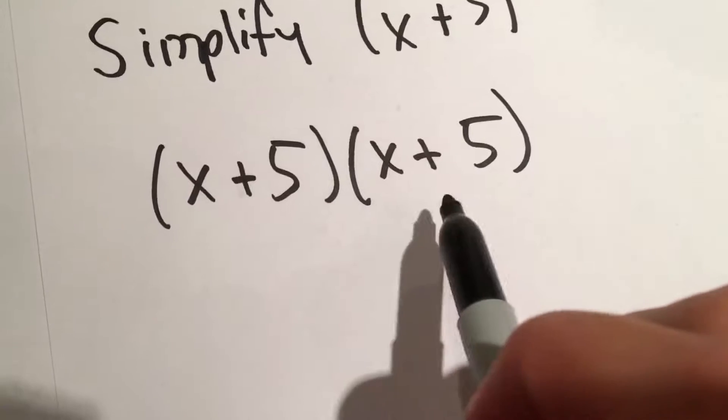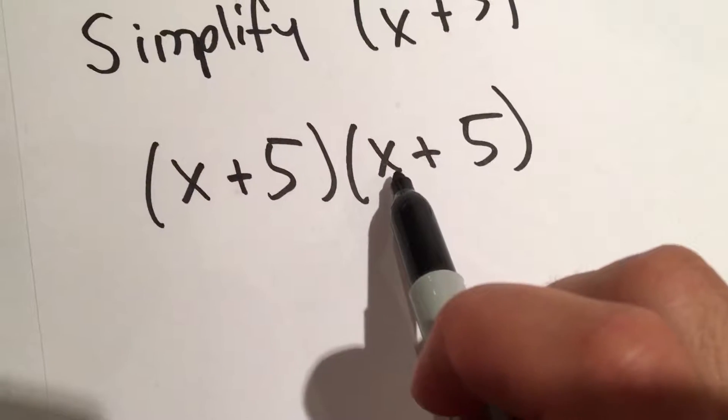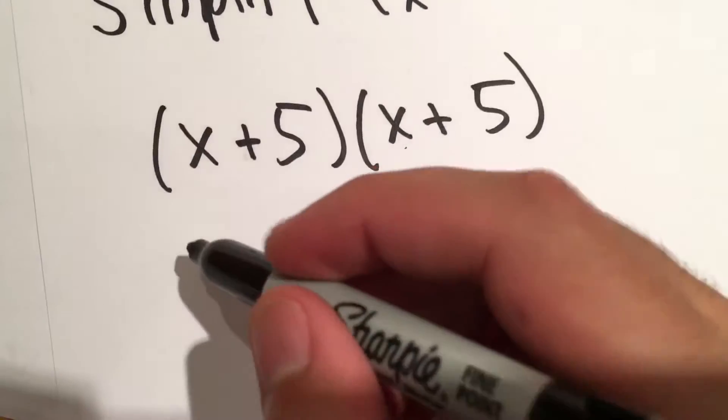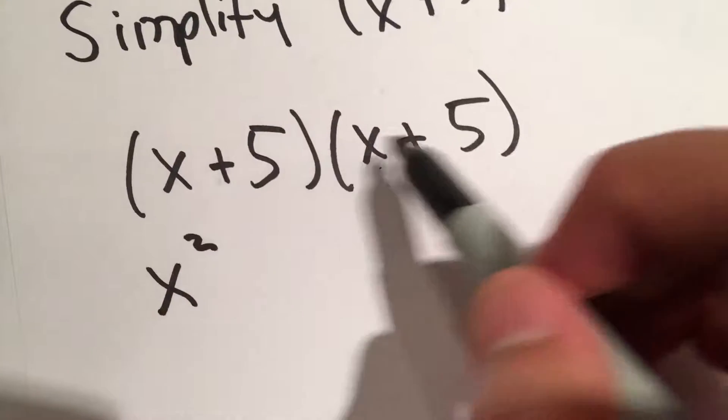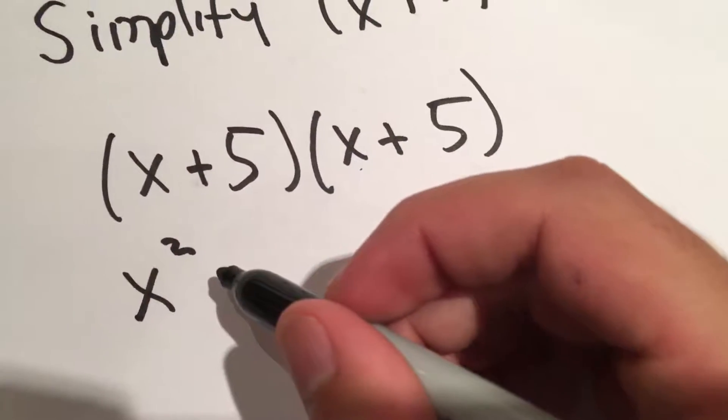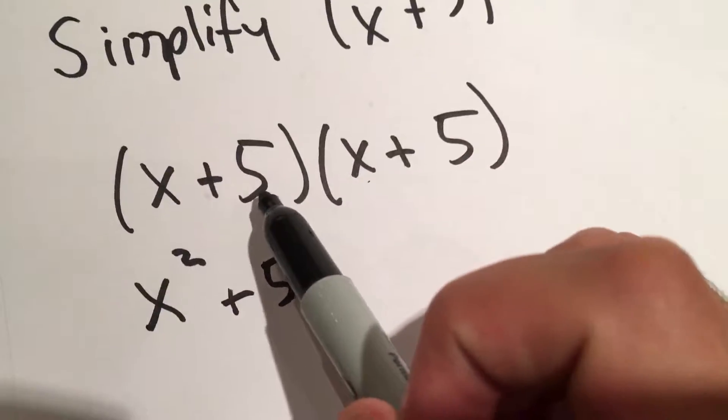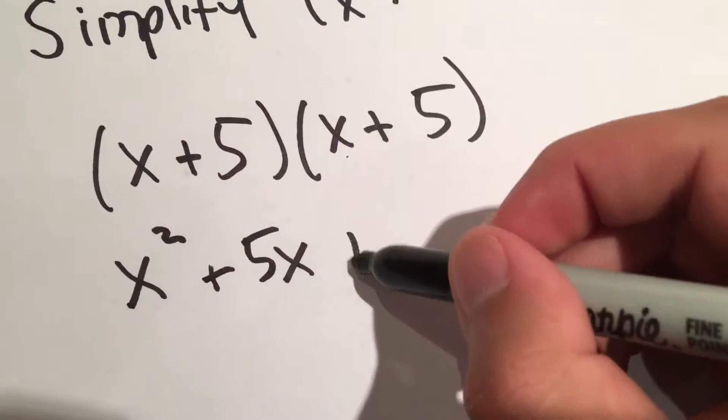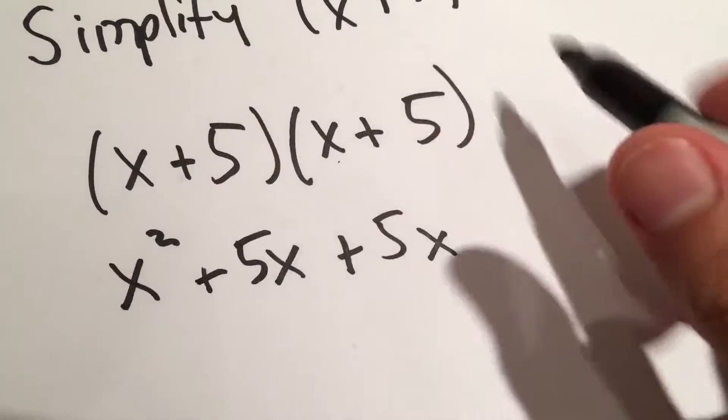So the way we multiply this out is we FOIL it out. We take the first term, multiply it by that first term, equals x squared. Multiply the x times the 5, now we have plus 5x. Now we take the 5, multiply it by the x. It's another 5x. And multiply the 5 by the 5, which is 25.